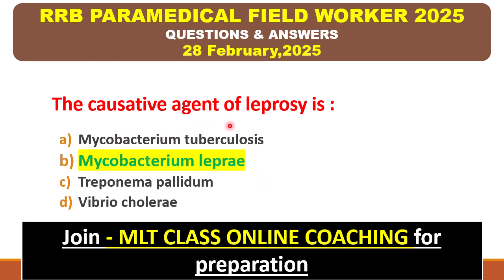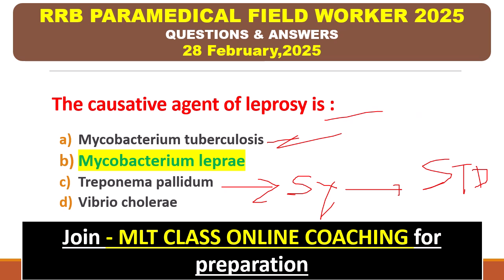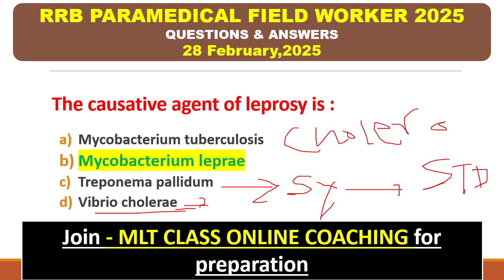The causative agent of leprosy is — Mycobacterium tuberculosis, Mycobacterium leprae, Treponema pallidum, or Vibrio cholerae? The right answer is Mycobacterium leprae. Mycobacterium tuberculosis causes TB. Treponema pallidum causes syphilis, which is an STD (sexually transmitted disease). Vibrio cholerae causes cholera.